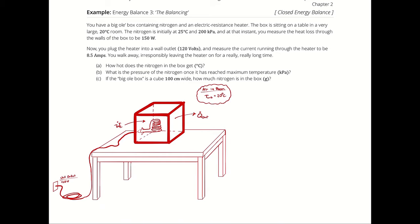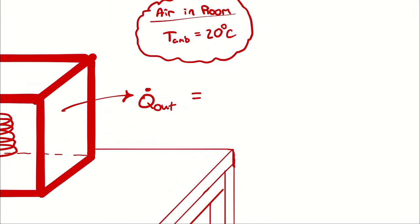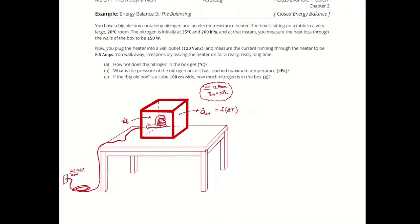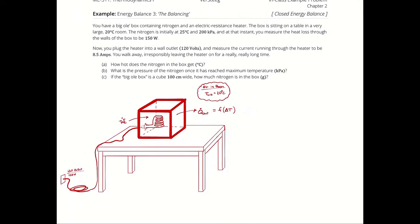The nitrogen is rejecting heat to its surroundings. Initially, at the beginning of the process, we have a temperature difference of 5 degrees Celsius. As the temperature of the nitrogen increases, the rate of electrical work entering will be the same, but the rate of heat rejection will increase because this rate of heat rejection is a function of delta T. Eventually the temperature of the nitrogen will level off — at that point, the rate of electrical work entering is the same as the rate of heat transfer out, meaning all of the energy coming in is going back out again.